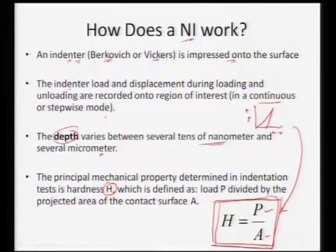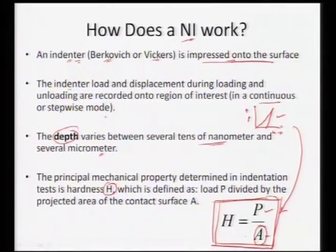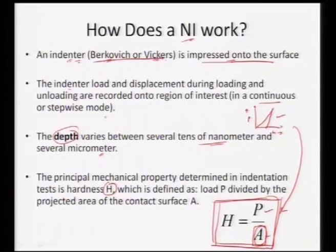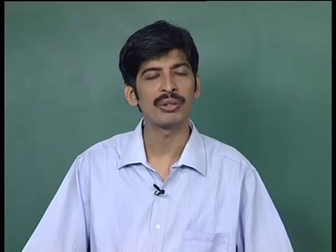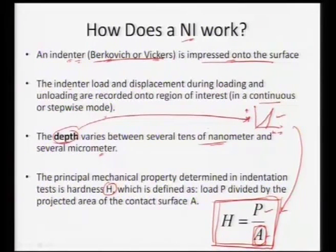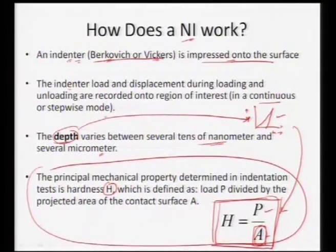Hardness can be calculated through measurement of load and area. We utilize a particular indenter — Berkovich, Vickers, or conospherical — impressed on a surface, and we measure the continuous loading and unloading. Measuring the contact area is not easy as in regular bulk testing, because Berkovich, Vickers, or conospherical tips may not have a perfect geometry. To address this, we always utilize standardization or calibration of the tip to measure the contact area with respect to the depth of the material.